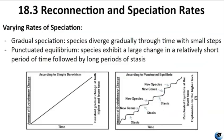When it comes to speciation rates, scientists study living organisms and fossils and develop models to explain different patterns. The gradual speciation model suggests that species diverge slowly over time in small steps. The punctuated equilibrium model proposes that a new species undergoes rapid changes from the parent species and then remains largely unchanged for extended periods. It's important to note that punctuated equilibrium doesn't exclude gradualism — it simply suggests a faster pace at certain times.